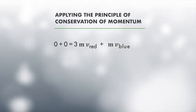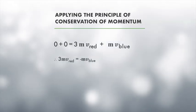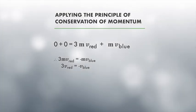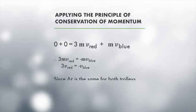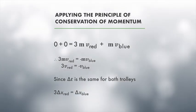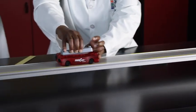Now we will try one trolley with three times the mass of the other. Applying the principle of conservation of momentum, the initial linear momentum of the system equals its final momentum. Therefore 3mv_red equals minus mv_blue. Dividing through by mass m, we get 3v_red equals minus v_blue. Since delta t is the same for both trolleys, 3 delta x_red equals delta x_blue, so delta x_red equals one third of delta x_blue. We divide the track into four equal parts: the red trolley must travel one quarter of the track and the blue trolley travels three quarters in the same length of time.